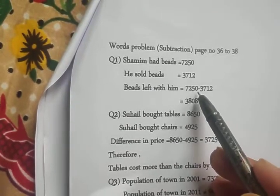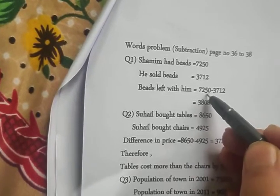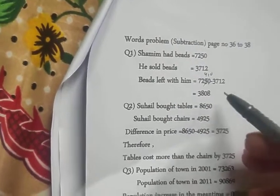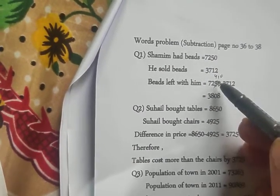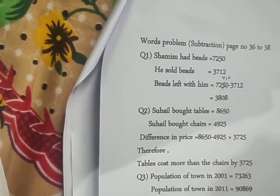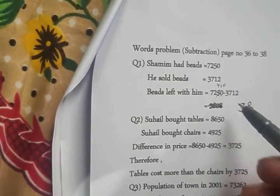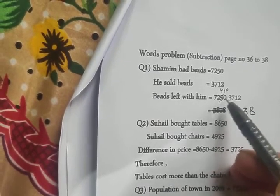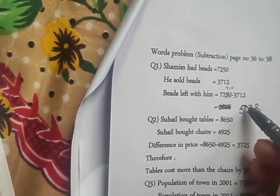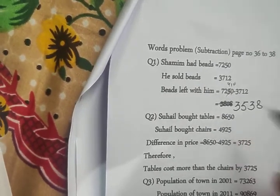First we subtract the ones place: 0 and 2 — 0 can't be subtracted from 2, so we take 1 from 5, it becomes 10; it remains 4. 10 subtract 2 is 8. Now 4 subtract 1 is 3. Now 2 can't be subtracted from 5, so we take 1 from 7, it becomes 12. 12 subtract 5 is 6 — no wait, 12 subtract 7 is 5, then 6 subtract 3 is 3. So the number of beads left with Samim is 3538.